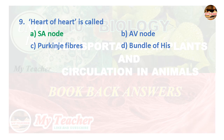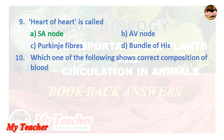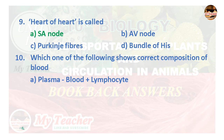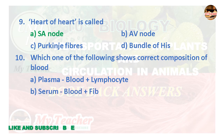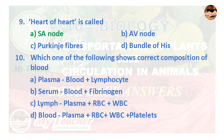Tenth question: Which one of the following shows correct composition of blood? A. Plasma + lymphocyte, B. Serum + fibrinogen, C. Lymph = plasma + RBC + WBC, D. Blood = plasma + RBC + WBC + platelets. Answer is Option D: Blood = plasma + RBC + WBC + platelets.